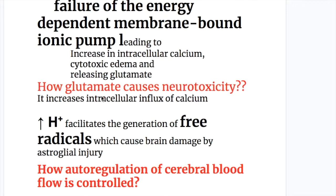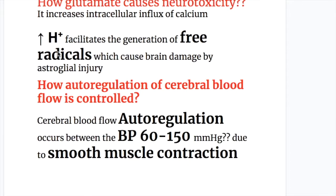How does glutamate cause neurotoxicity? Glutamate increases intracellular influx of calcium. Increased hydrogen ion concentration facilitates the regeneration of free radicals, which cause brain damage by astroglial injury.